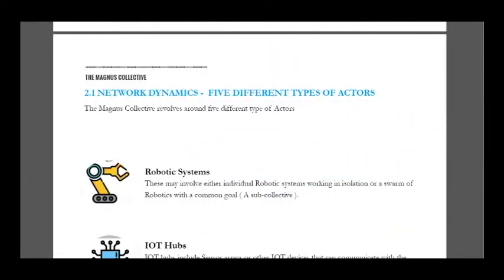Hello, I am Cryptamig and this is my Part 3 about Project Magnus. Today I want to continue to discuss the white paper. As you can see, here is network dynamics — five different types of factors.